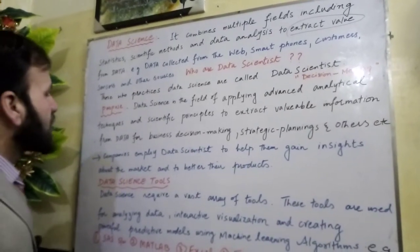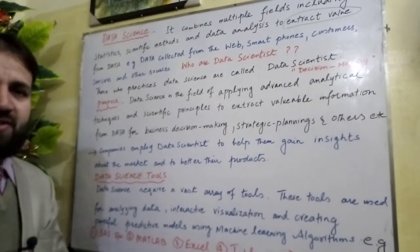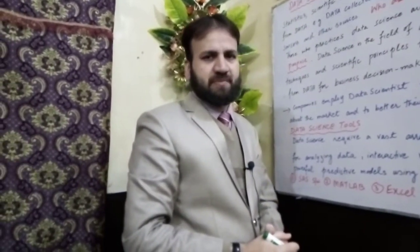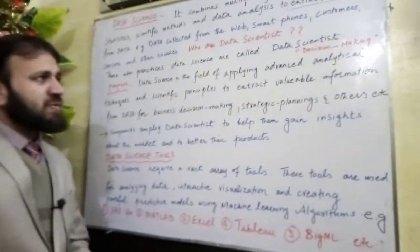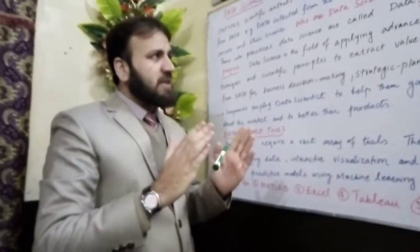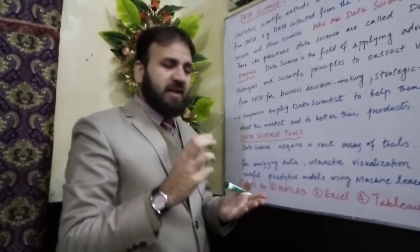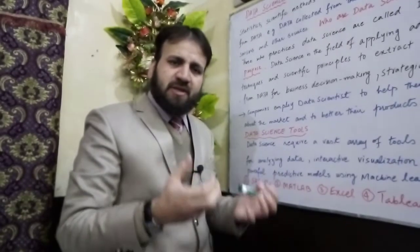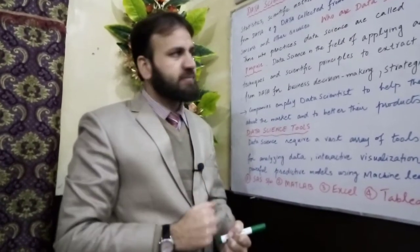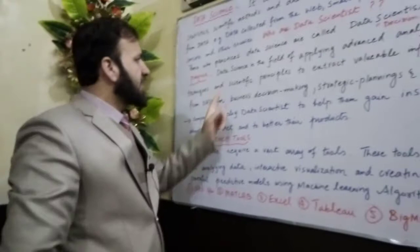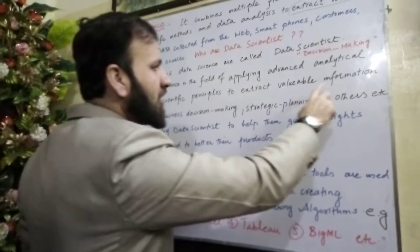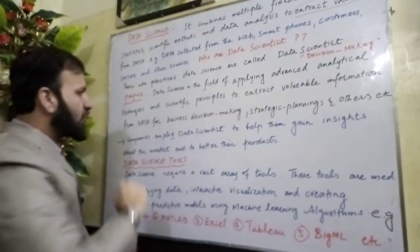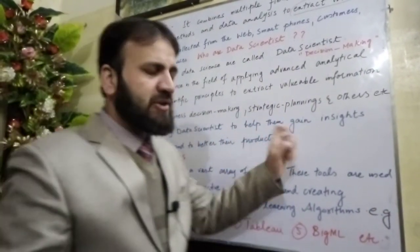Those who practice data science are called data scientists, and data science is used for decision making in any organization. The purpose of data science is to apply advanced analytical techniques and scientific principles to extract valuable information from data for business decision making, strategic planning, and others. Data science is the field of applying advanced analytical techniques and scientific principles to extract valuable information from data.